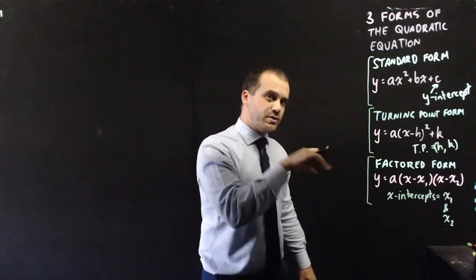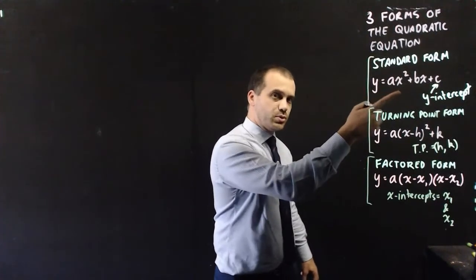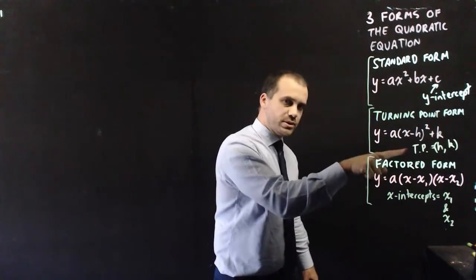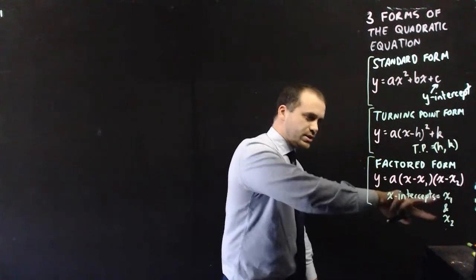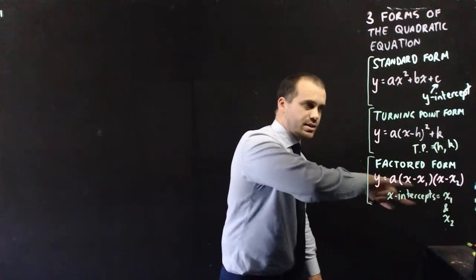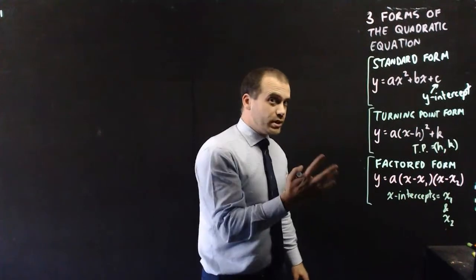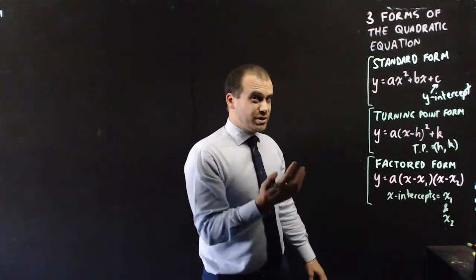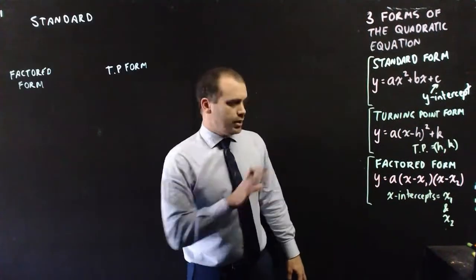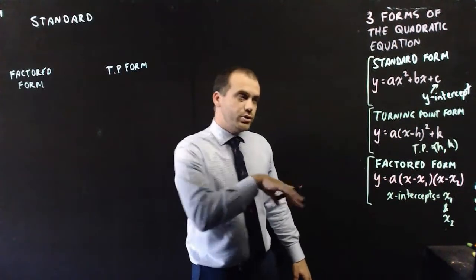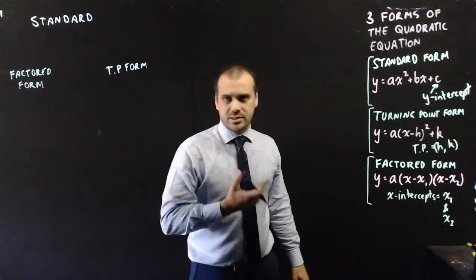We have three different forms of the same equation. This one tells us the y-intercept. This one tells us the turning point. And this one tells us the x-intercepts. All together we know all the information that's really interesting when it comes to a quadratic. Now importantly you can move between these fairly easily.